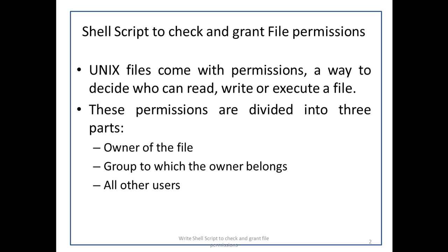Unix files come with permissions — a way to decide who can read, write, and execute a file. These permissions are divided into 3 parts: the owner of the file, the group to which the owner belongs, and all other users. All three users have 3 permissions: read, write, and execute.